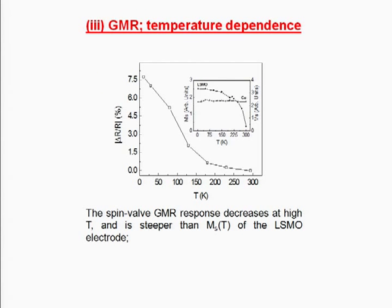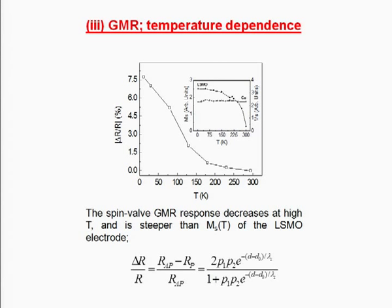Another difficulty was temperature dependence. We found the effect goes away at high temperature, and at room temperature we have only about 1%. Nobody really understands why the giant magneto resistance goes away, because the figure of merit — delta R over R — depends on both the polarization degree of the ferromagnet and the spin diffusion length. So we don't know whether this temperature dependence is due to the ferromagnet or due to the organic diffusion length temperature dependence.